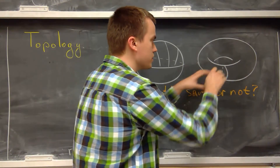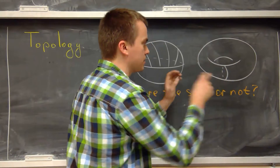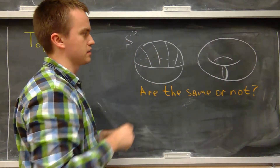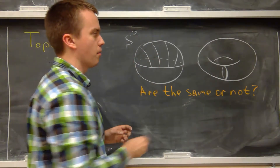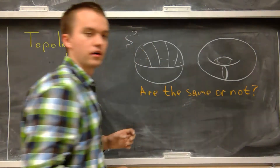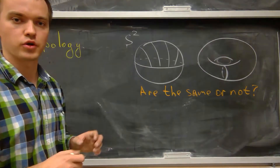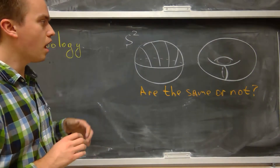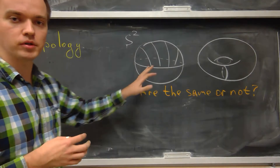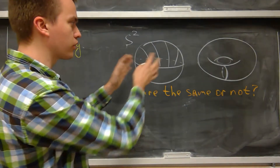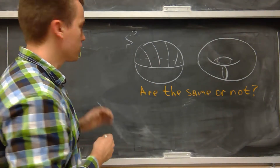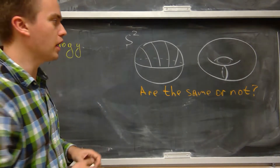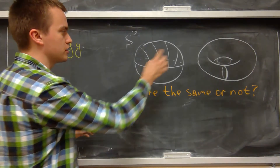For the torus you can see it always bounds an emptiness inside, bounded by its surface, but it also has a hole going through it. So topologically speaking these two surfaces are different. Topology develops tools that allow us to distinguish these two surfaces.